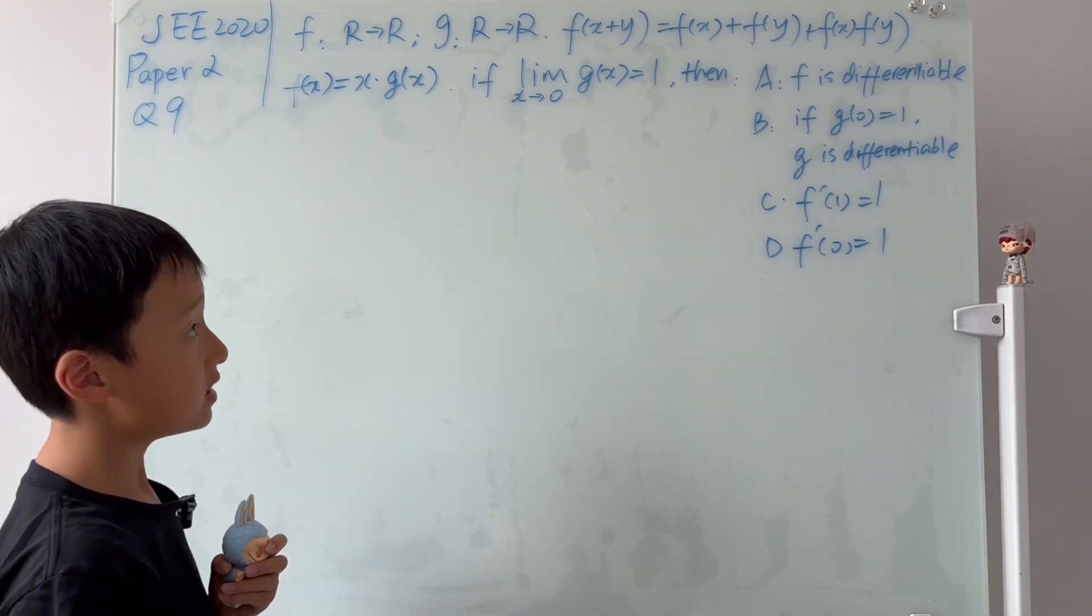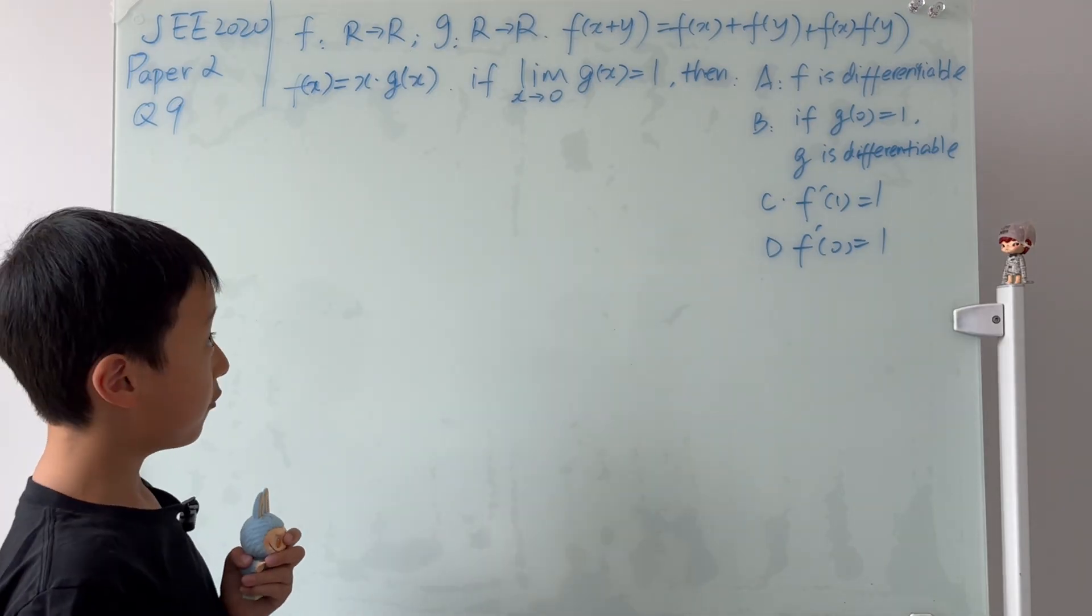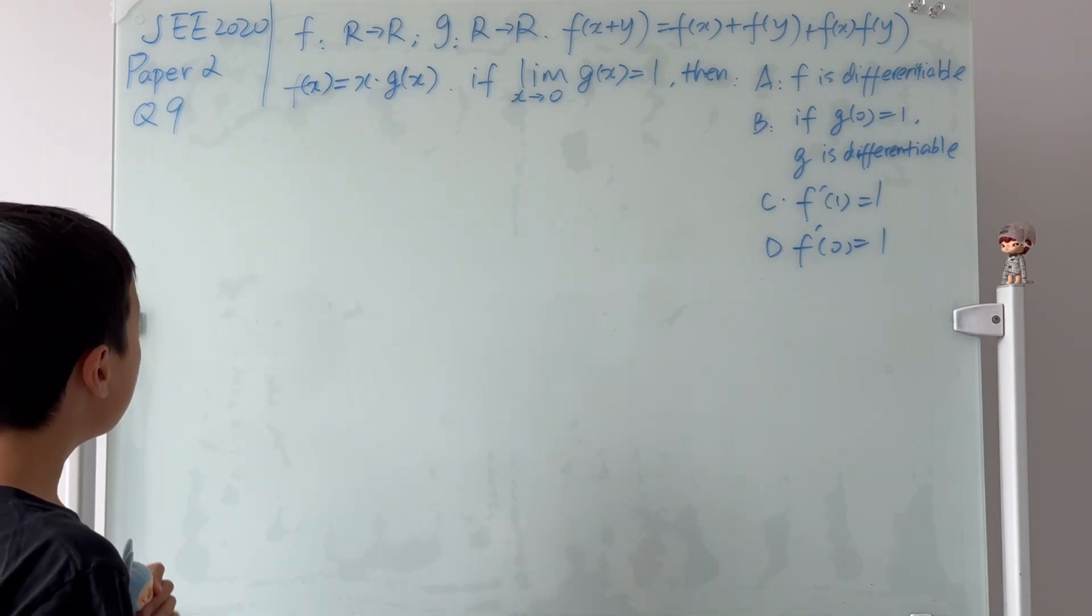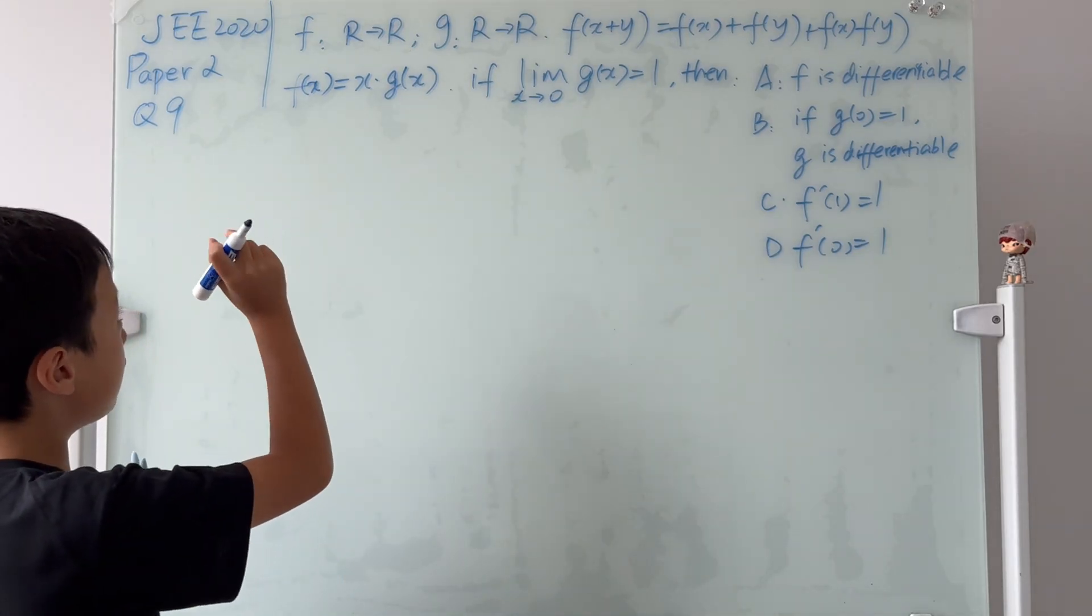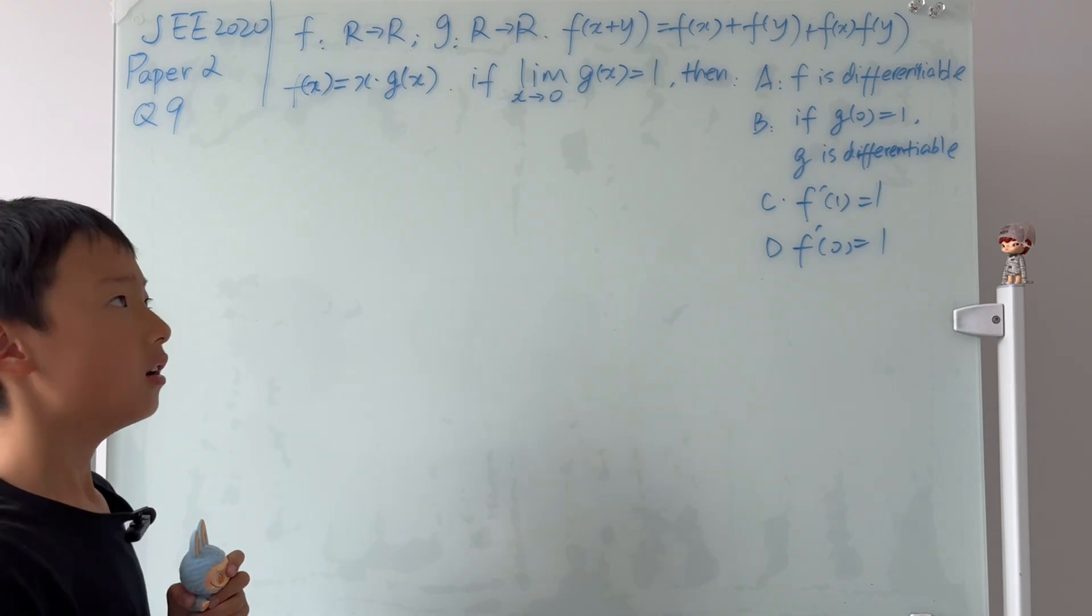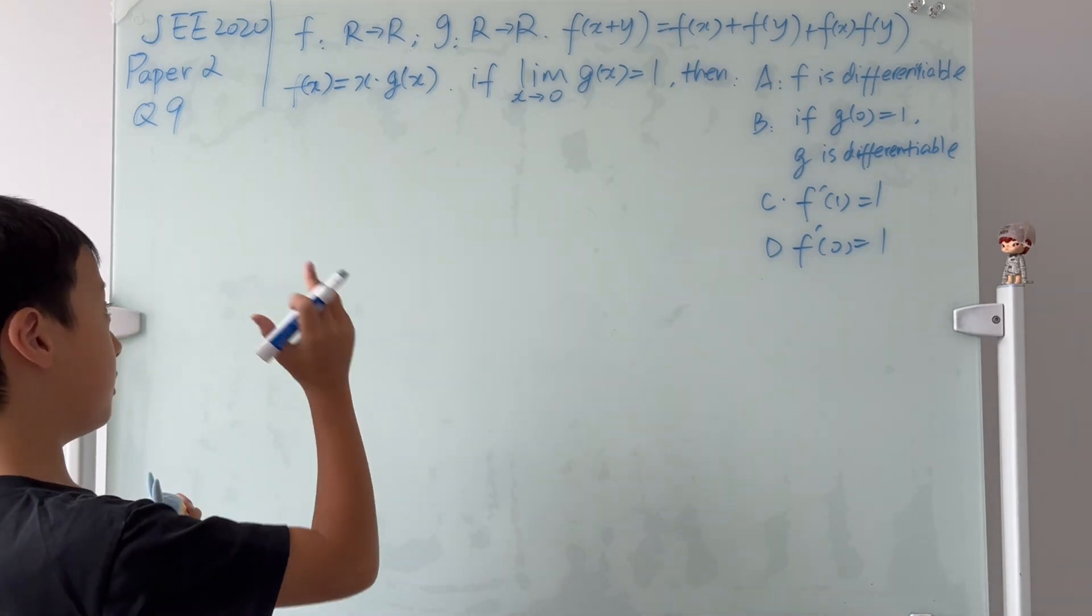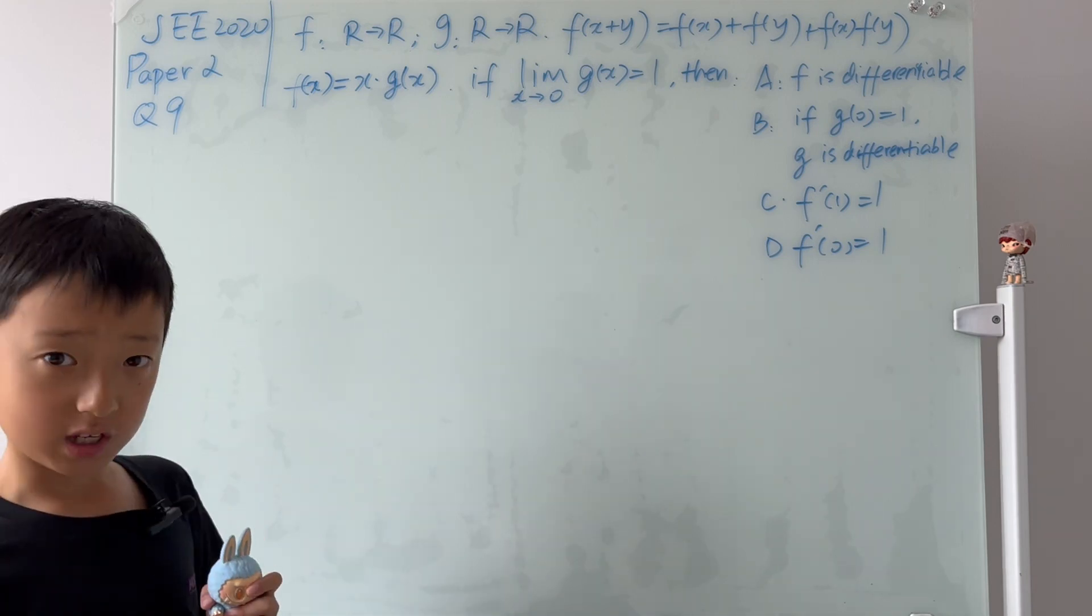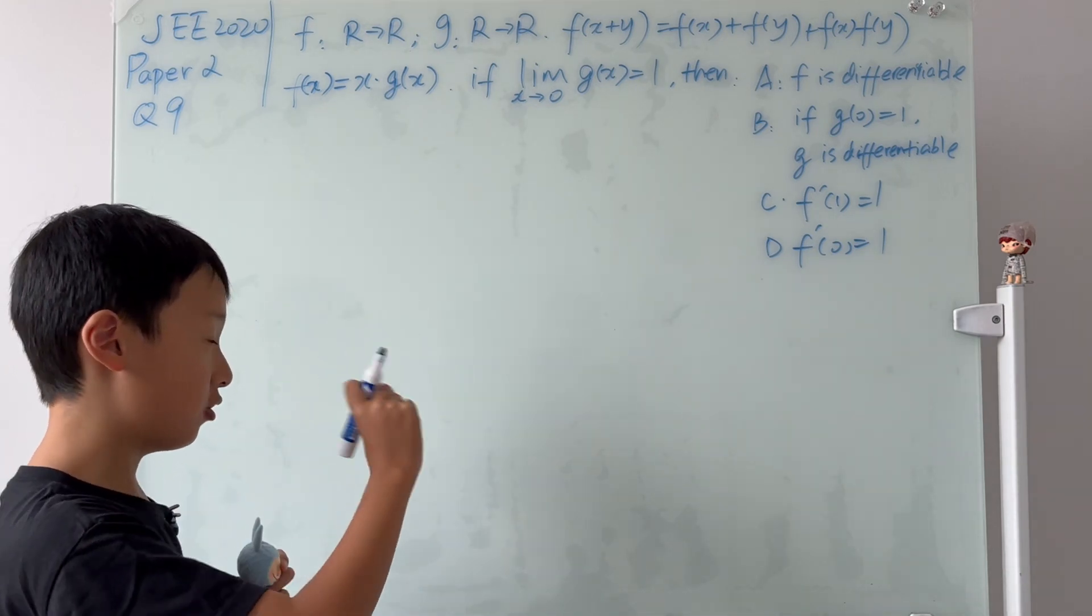f(x+y) is equal to f(x) plus f(y) plus f(x) multiplied by f(y). And if the limit as x goes to 0 of g(x) is equal to 1, then we have to see which: a, b, c, or d.